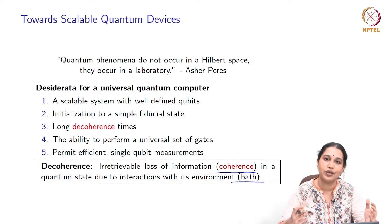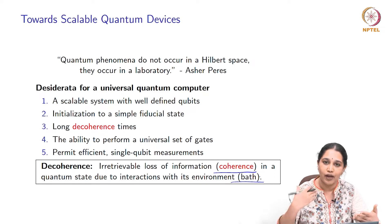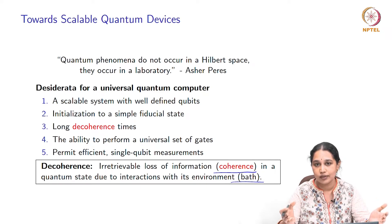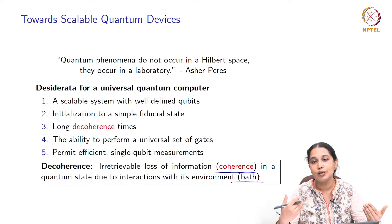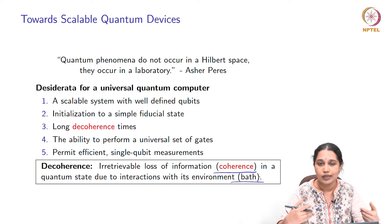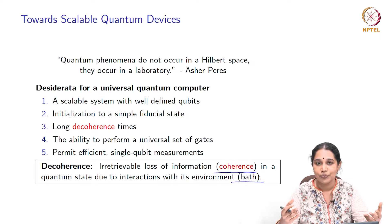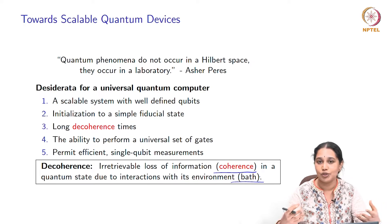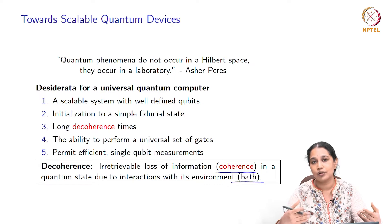In theory, we talk about them as if they are isolated systems, as if they only undergo the transformations that we wish them to undergo via unitary operators or gates. But in reality, quantum systems will typically interact with their environment or the surroundings or the bath, and this interaction is often going to lead to irretrievable loss of information from the system. The formal way of stating this is that it leads to loss of coherence. For example, I could prepare a state in a coherent superposition of two qubits and we would lose the phase information as the system undergoes interaction with its environment.